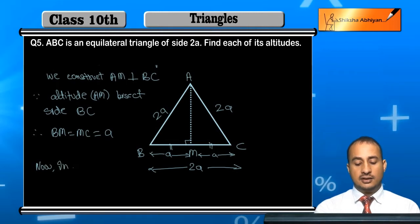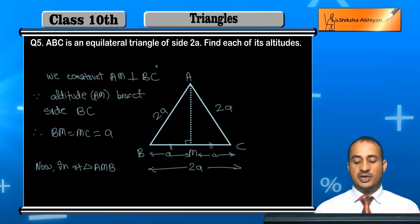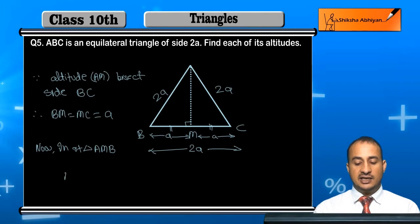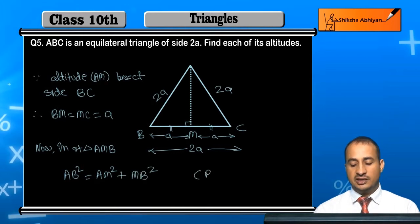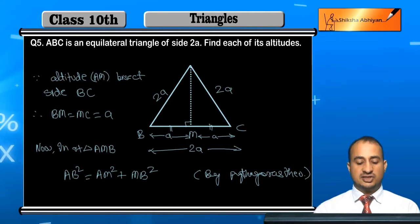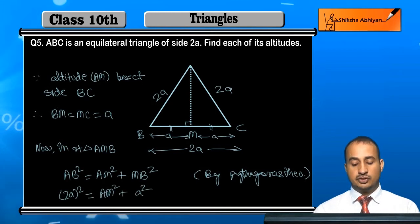Now in right triangle AMB, angle M is 90 degrees. Applying the Pythagorean theorem: AB² = AM² + MB². AB is 2a, so AB² = 4a². We need to find AM, and MB = a, so MB² = a².